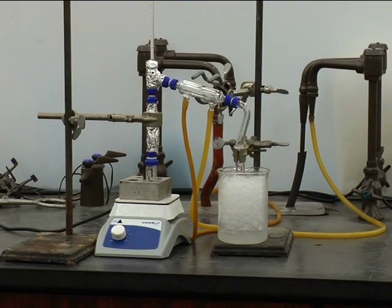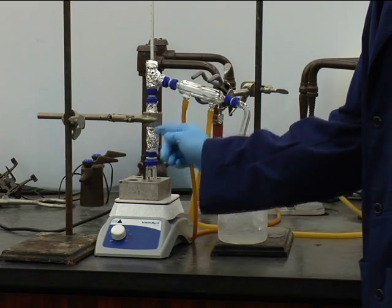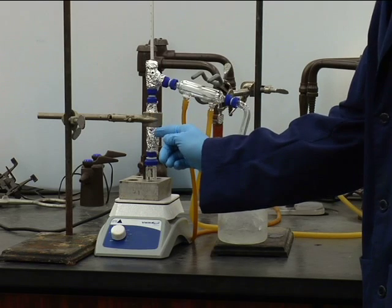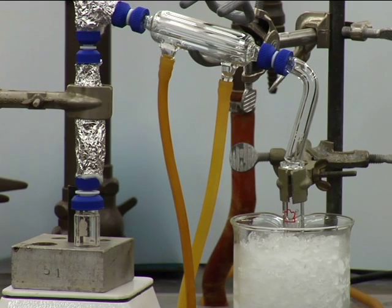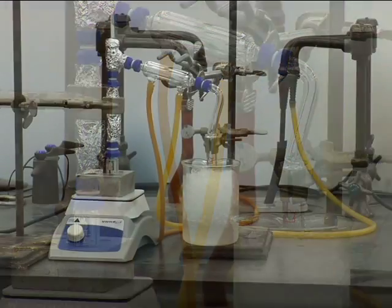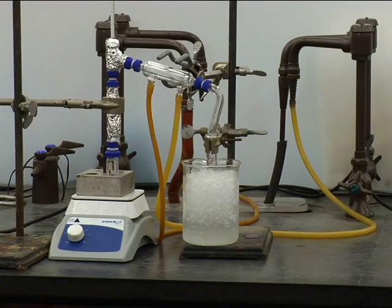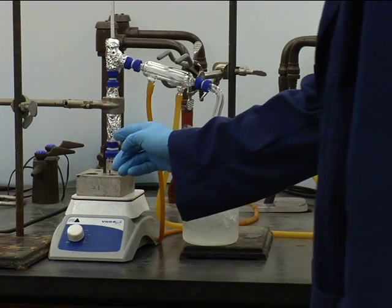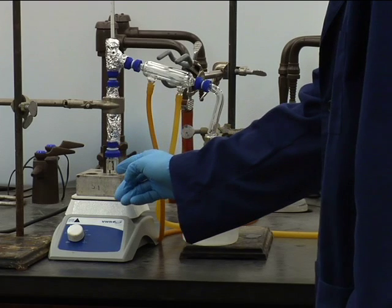When a mixture of cyclohexanol and catalyst is heated in a flask equipped with a fractionating column, the formation of water is soon evident. On further heating, the water and the cyclohexene formed distill together. However, any remaining high boiling cyclohexanol starting material refluxes and is returned to the flask.